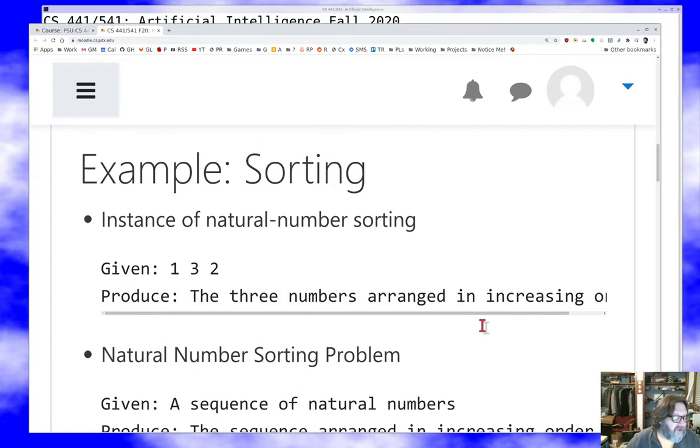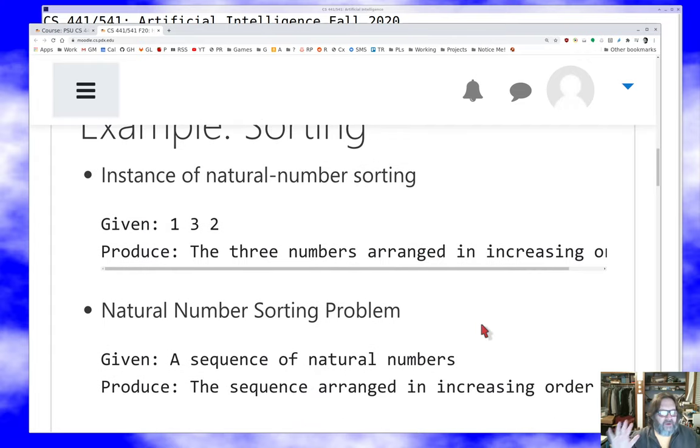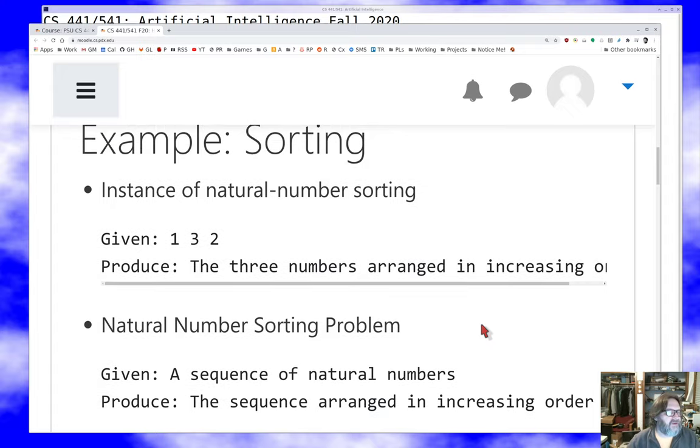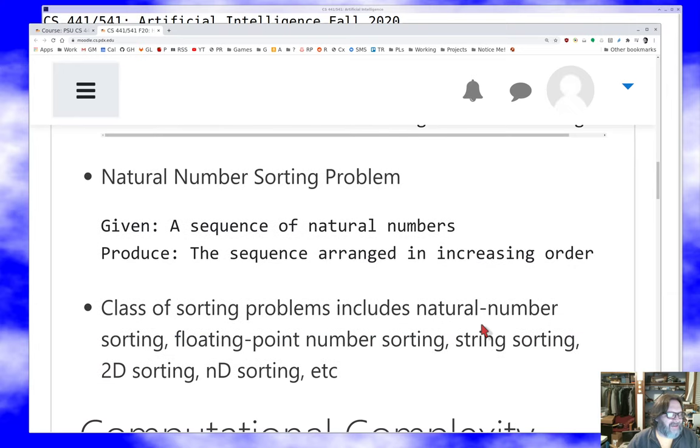Well, it's not a very hard instance. You can swap two with three or however you want to do it to get one, two, three, which is pretty clear these numbers arranged in increasing order. So that's an instance, very specific numbers, no generality of any kind. What's the natural number sorting problem? Well, given any sequence of natural numbers, whatever it is, you want to arrange that sequence in order. So if I give you one, five, seven, five, one, one, three, one, then there's a unique output that you need to somehow produce.